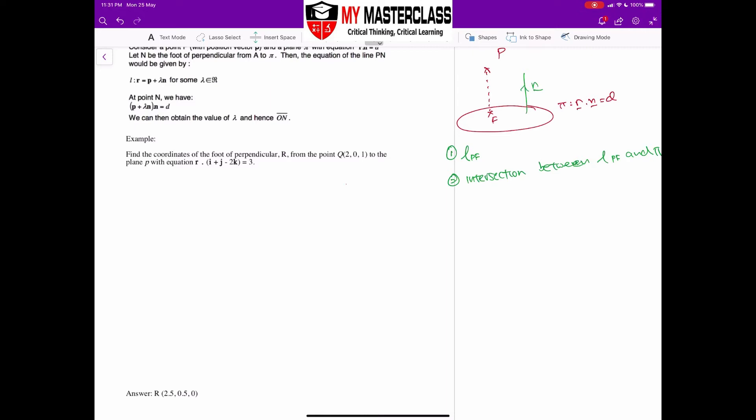The question did say find the coordinate of the foot of perpendicular R from the point Q to the plane P with equation R... The question did actually define for you what is your foot of perpendicular, so there's no need for me to define my foot of perpendicular. Same thing, I'm going to quickly draw out this point Q, 201, and this is my plane R dot (1,1,-2) equal to 3.